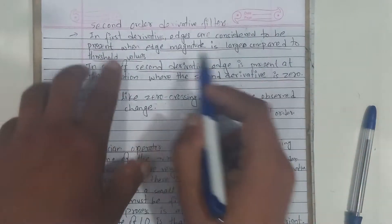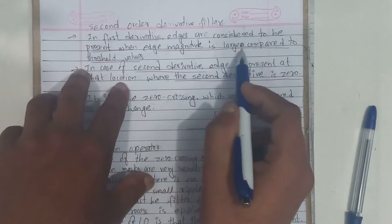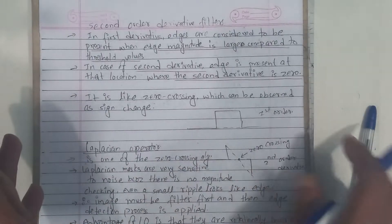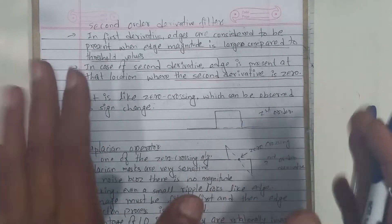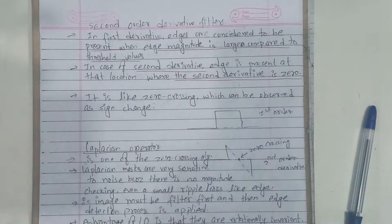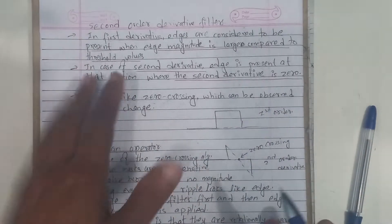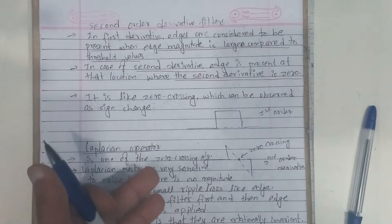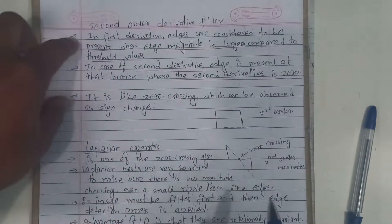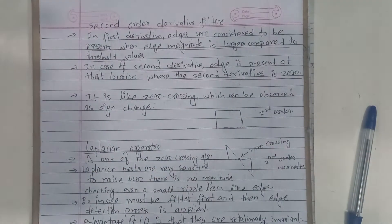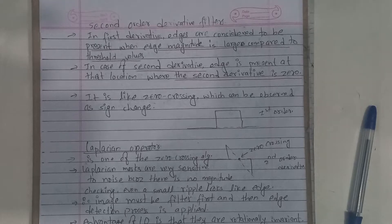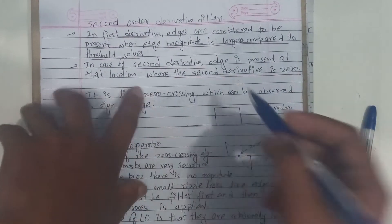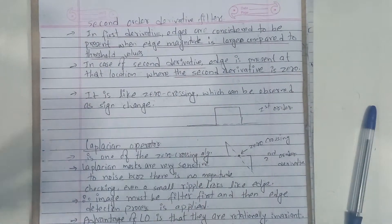Edges are considered to be present when the magnitude in the first derivative meets the threshold values. The second derivative at an edge crossing is 0.